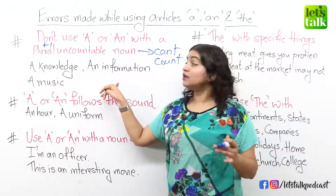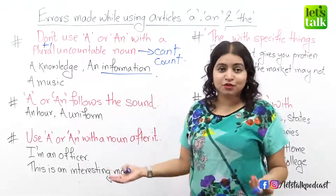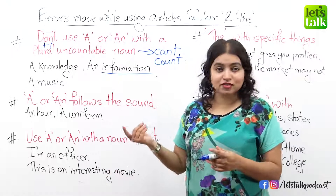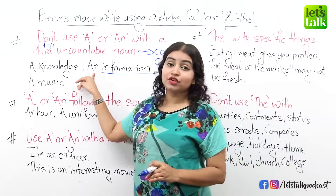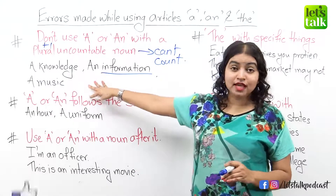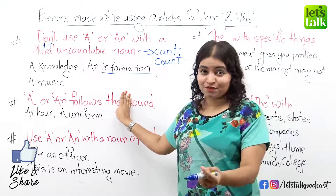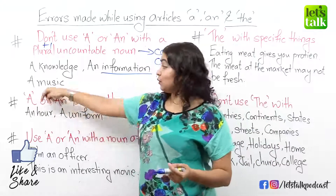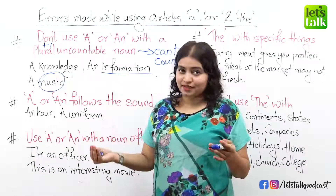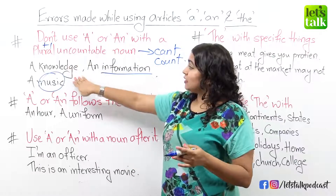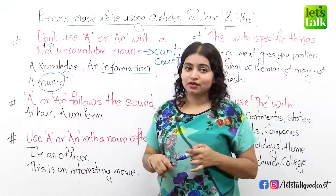Similarly, another very often used uncountable noun is information. It can't be counted — you can't have two informations or three informations. It's just information. So you will never use an or a before it either. You could say "I need a piece of information," but you can't say "I need an information." The same goes with another uncountable noun which is music. You can listen to some music but you can't listen to a music. That is how we do not use a or an before uncountable nouns.